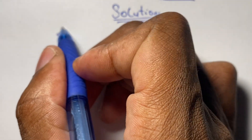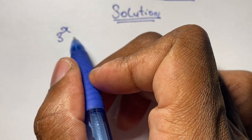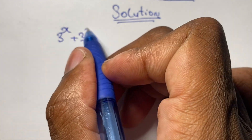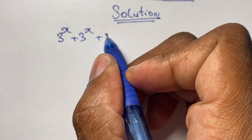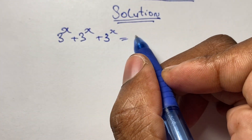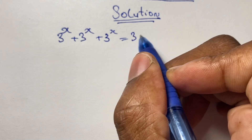Our equation is that 3 to the power of x, plus 3 to the power of x, plus 3 to the power of x, is equal to 36.